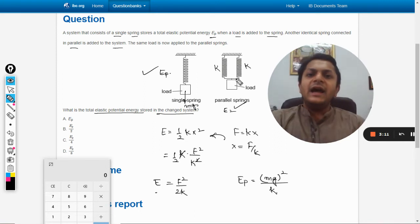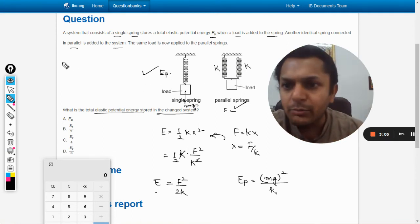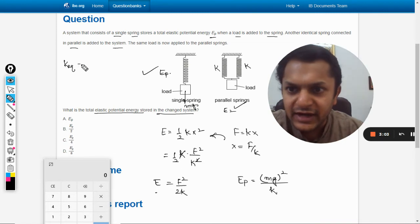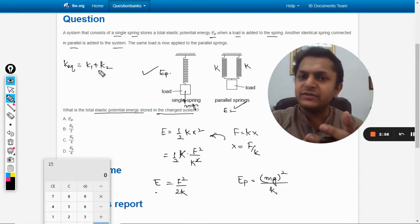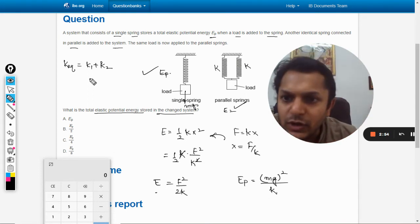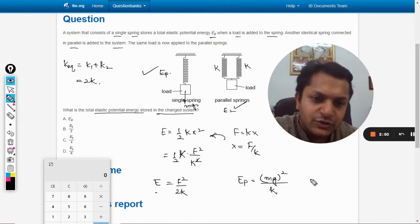Now in the second case, when there are two springs which are in parallel and both of them are identical, having the same spring constant that is k and k. So we know that in parallel combinations, the k equivalent is basically the sum of the individual spring constants, k1 plus k2. So when k is equal, it becomes 2k.